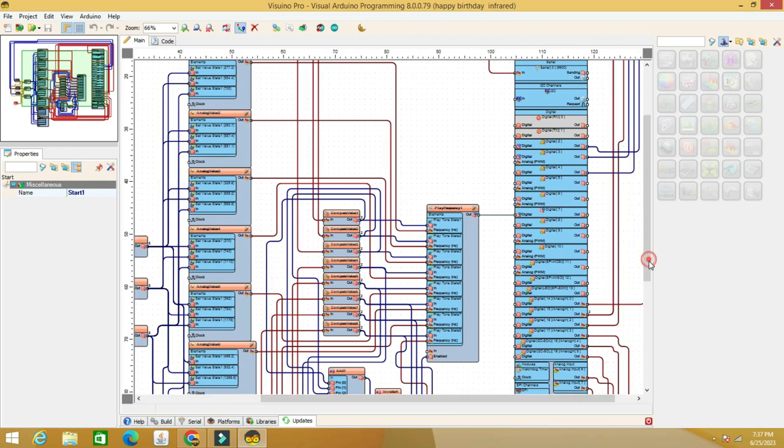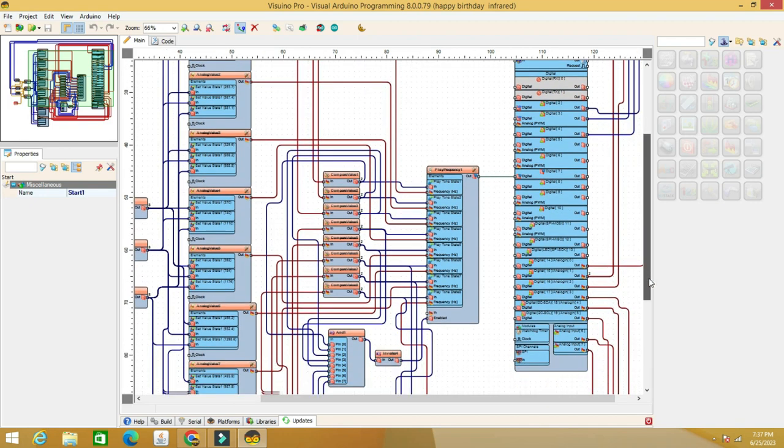The 8 compare analog value components read the value from infrared sensors, pins A0 to A7 of the Arduino board. The 8 analog inputs correspond to one tone each.